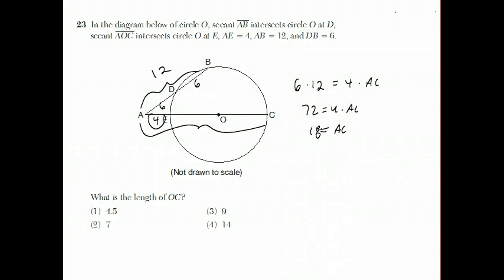6 times 12 is 72, equals 4 times AC. So AC equals 18. Since AE is 4 and the whole thing is 18, that means this piece is 14. Now before you get too excited, they were asking how big OC was. This is where the fact that O is the center comes in handy. OC is a radius, which is half the diameter, which is 7.